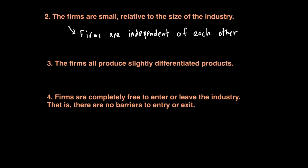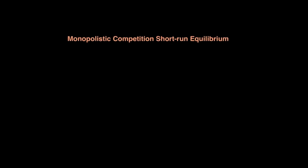In these industries, a large number of firms compete selling differentiated products that are heavily advertised, and firms come and go under the pressure of competition. Now let's look at monopolistic competition in the short run. In the short run, these are profit maximizers, which means that output will be decided where MC equals MR.